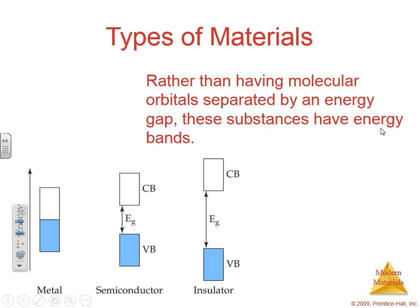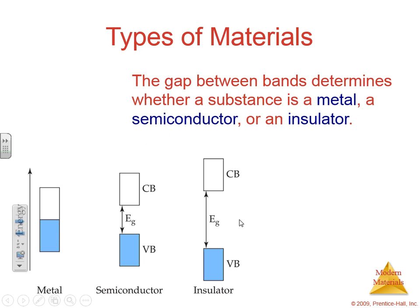In a semiconductor, the energy band is somewhat far apart, but not far enough to completely eliminate conductivity — so it's a semiconductor. And in insulators, the energy band is so far apart that it can't conduct electricity. So the gap determines whether a substance is a metal, semiconductor, or insulator.